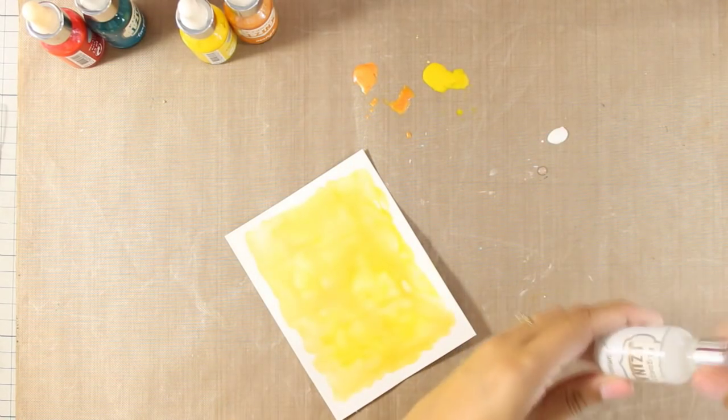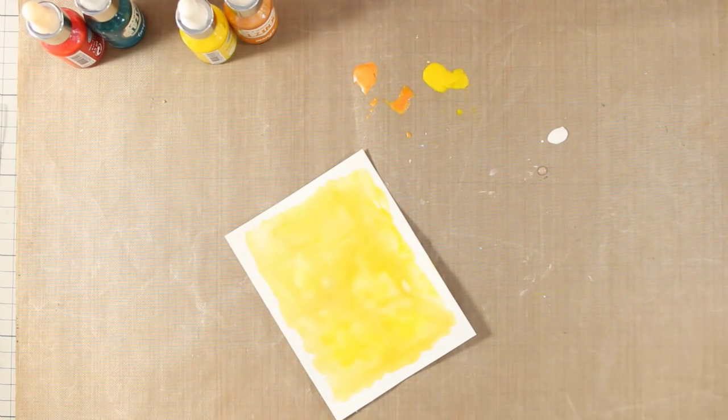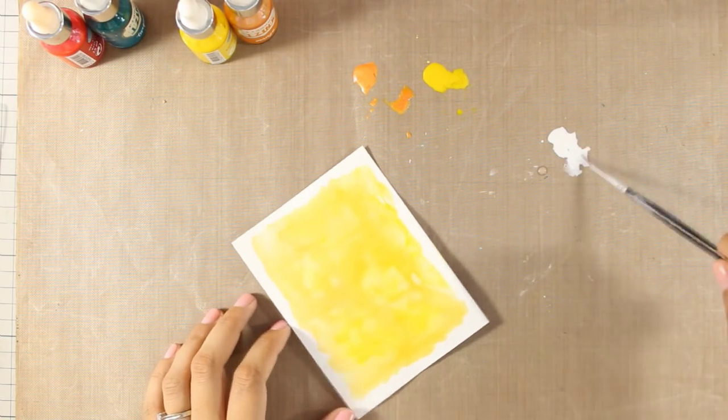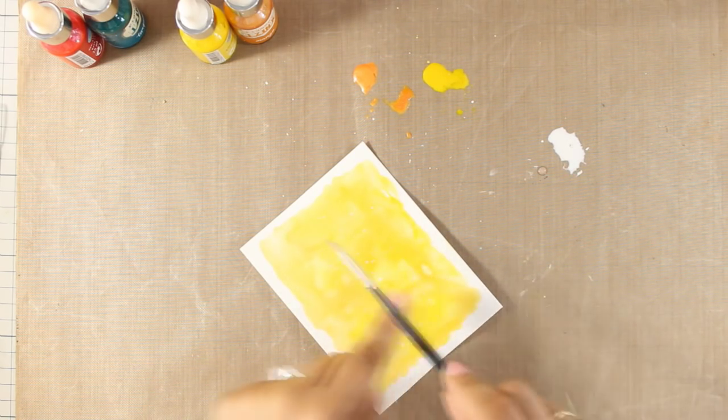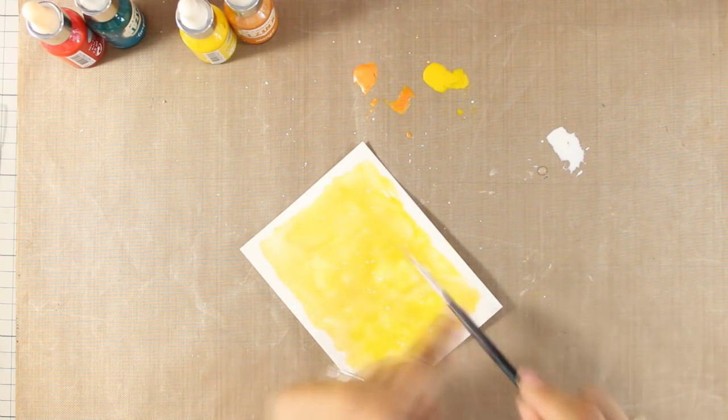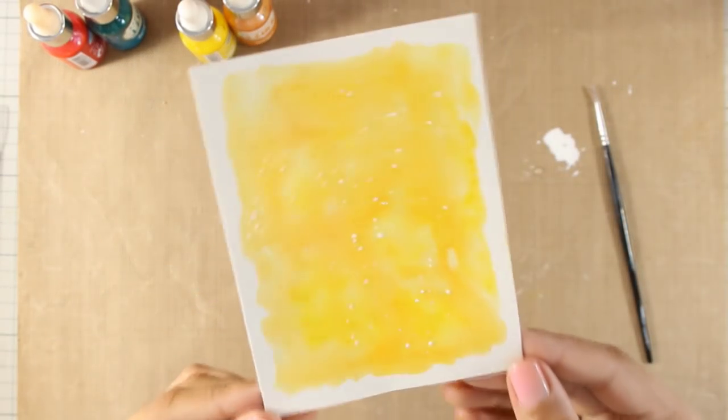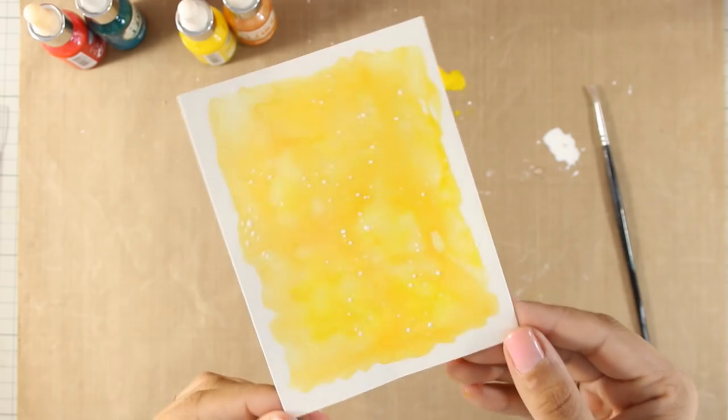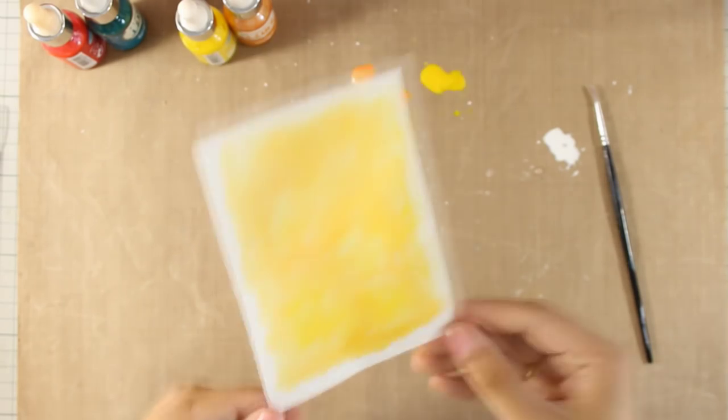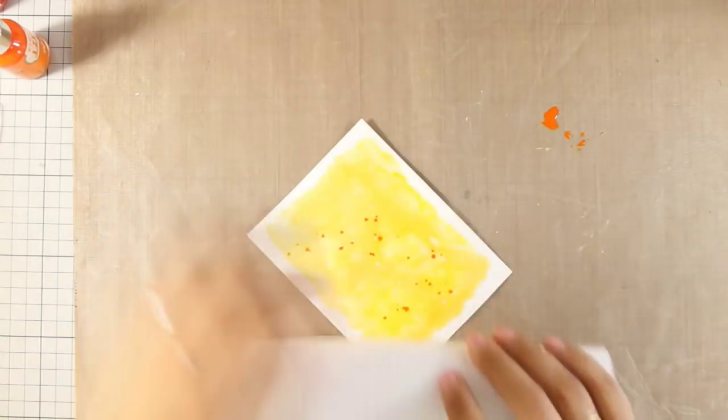So to add a little bit of interest on my background I am going to do some splashes and again I am using icing ink, the white color. I am using a small brush because I want to have tiny little splashes instead of big drops of color there. To make it even more interesting I repeated the same technique with a darker orange ink.